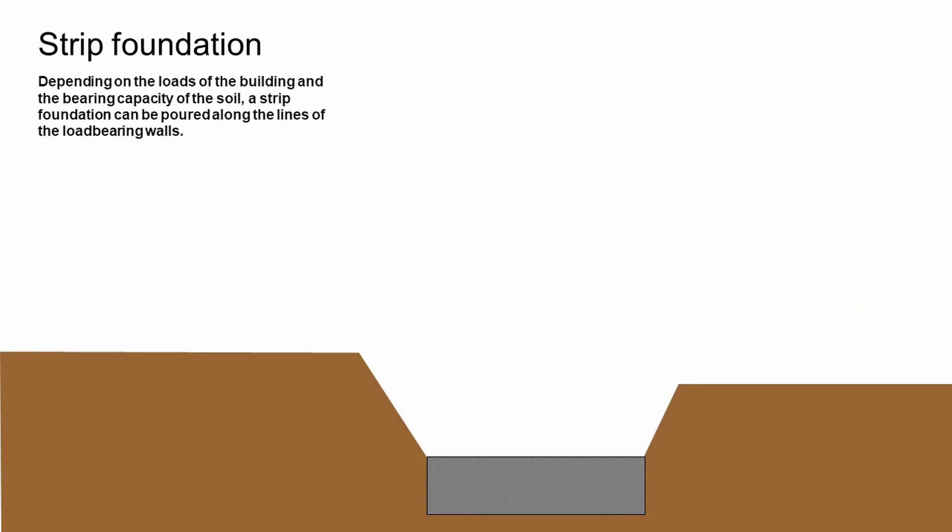The next step would be to pour the strip foundation. The strip foundation would follow the lines of the load-bearing walls and is a variable width and depth depending on the loads of the building and the bearing capacity of the soil.